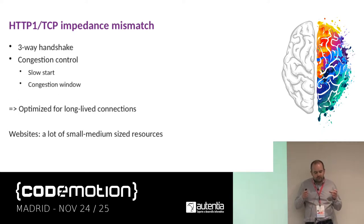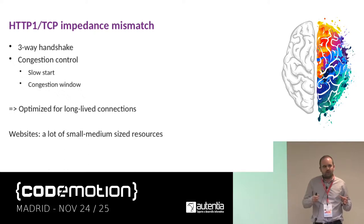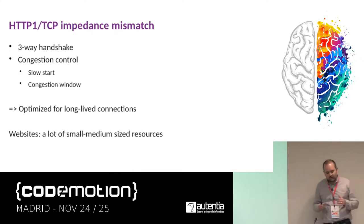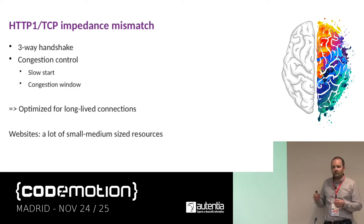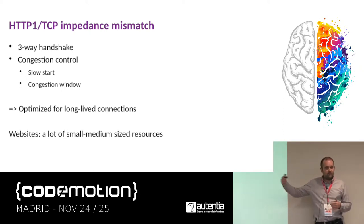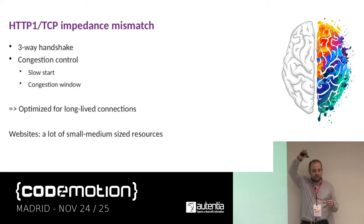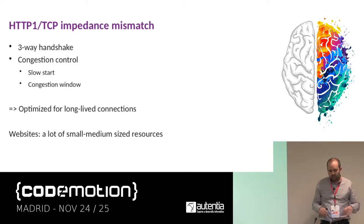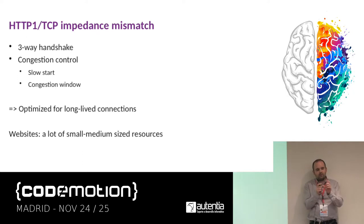TCP also has a congestion control mechanism — you don't want to overwhelm the client. So in the beginning, the sender is not allowed to send as many packets as it wants. This is the slow start mechanism: send one packet first, then two, then four, and so on. At some point packets are lost because too many are sent, and the two parties slow down again and gradually increase the congestion window — the number of packets allowed on the network unacknowledged.